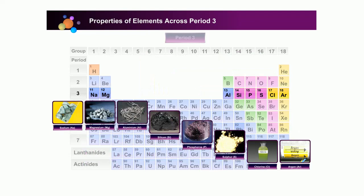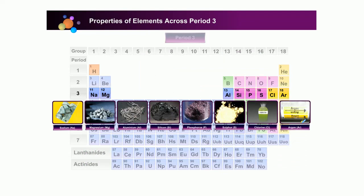All the elements in period 3 exist as solid except chlorine and argon which are gases.